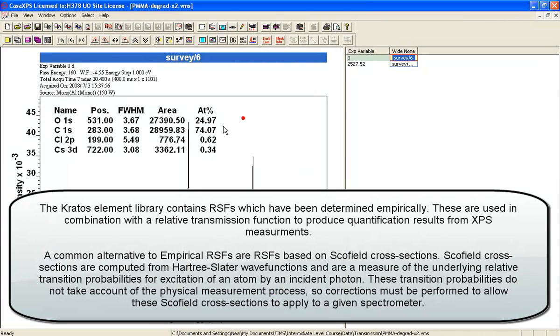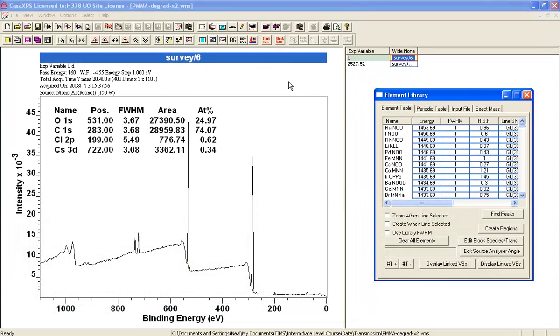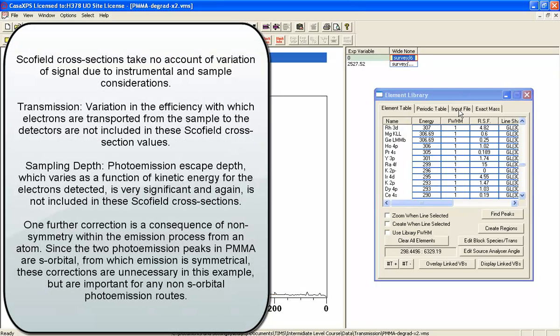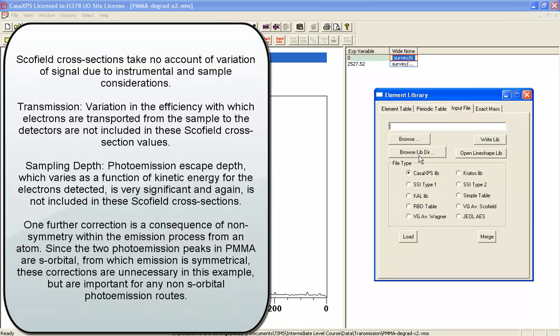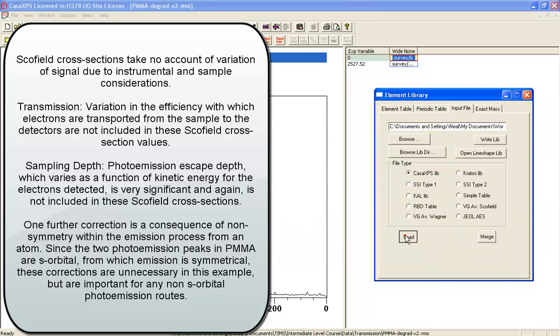We'll now investigate the quantification further by changing the strategy. What we'll do is alter from the original Kratos library to a library based on Schofield. I'm going to load the Schofield library here and press the load button so the table is updated.